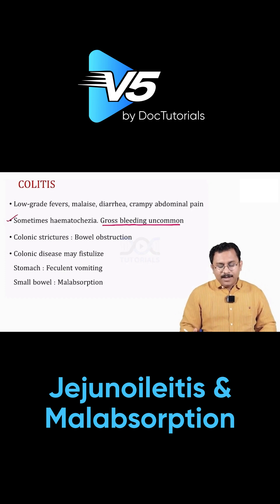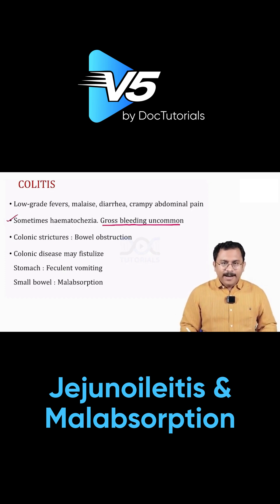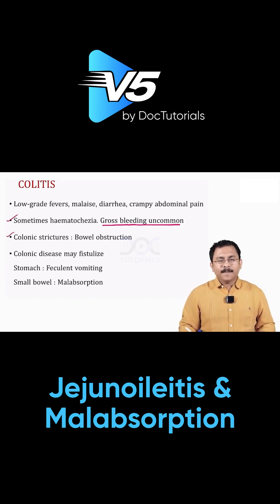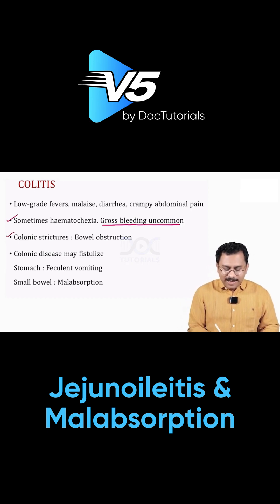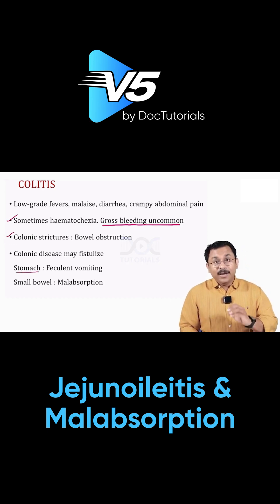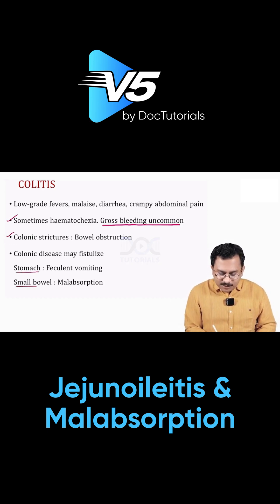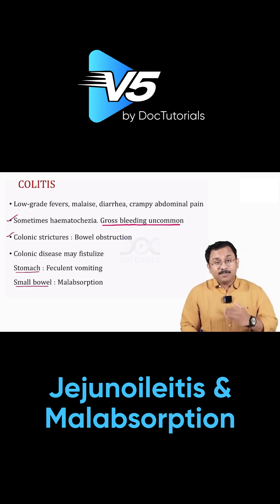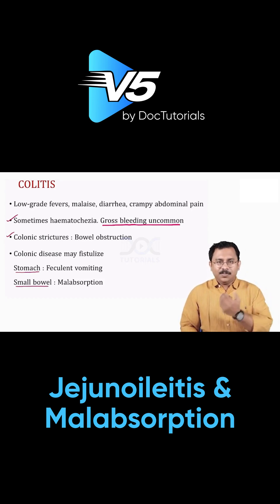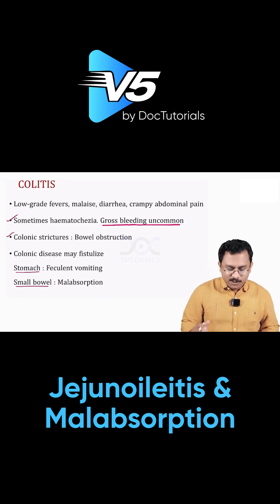You may get hematochezia — some blood in stools — but gross bleeding is uncommon. When you have a colonic stricture, you can have bowel obstruction. Fistula is another problem: fistula between the colon and the stomach can cause feculent vomiting, and fistula between the colon and the small bowel can result in malabsorption, as direct passage from the small bowel to the colon can also cause malabsorption.